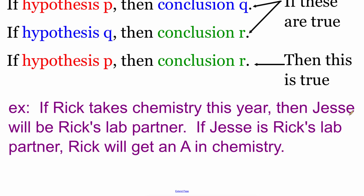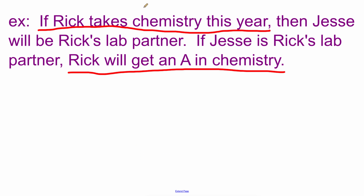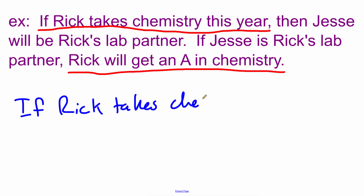Here's the example: if Rick takes chemistry this year, then Jesse will be Rick's lab partner. Our second conditional statement says if Jesse is Rick's lab partner, then Rick is going to get an A in chemistry. To combine these two separate conditional statements, we take the hypothesis from the first statement and the conclusion from the second statement. The new combined statement says: if Rick takes chemistry this year, then Rick will get an A in chemistry.